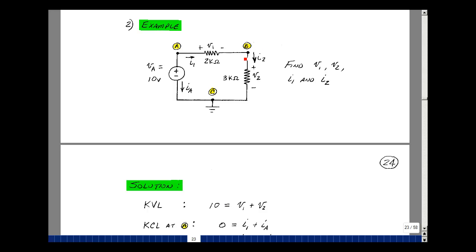I can also do Kirchhoff's current law here at node B. I1 is entering and I2 is leaving. So I've got a relationship again between I1 and another unknown, I2.